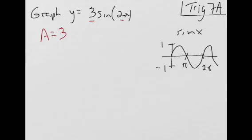What the 2 right here does is it takes this length and changes it. Currently it takes 2π to get through the entire cycle. We call that the period. The letter we use for that is T.